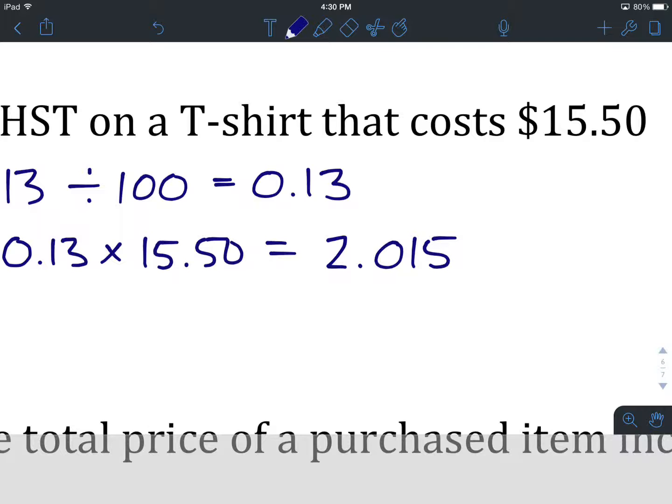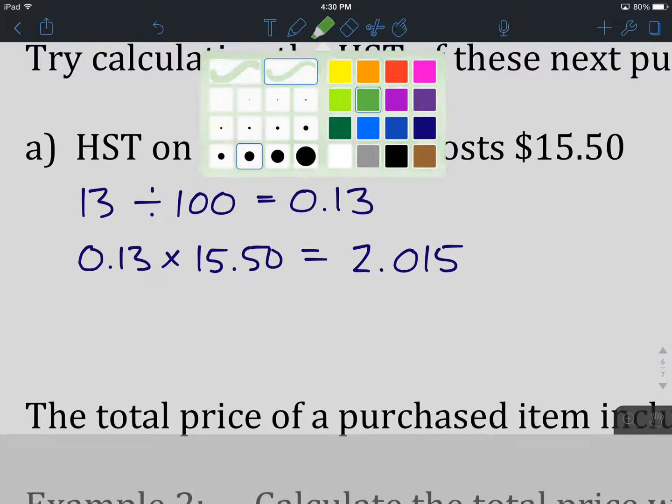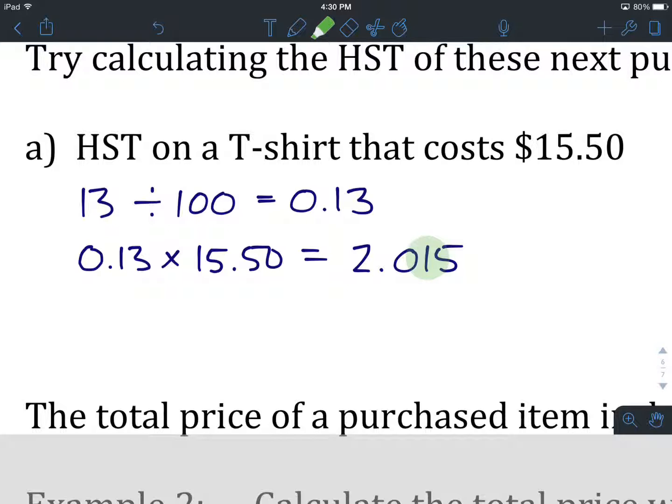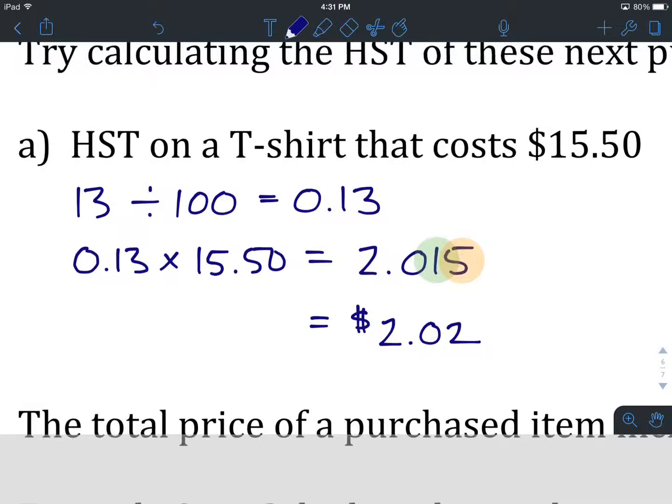Once again, we're in a position where we need to round to the nearest cent. We are going to locate cents. The digit in the cent place value is a 1. We look to the digit after it, or to the right of it, and it's a 5. The 5 tells us that anything 5 or greater, we're going to round up, so we're going to round that 1 up to a 2. Our HST on that t-shirt is going to be $2.02.